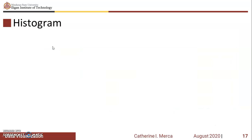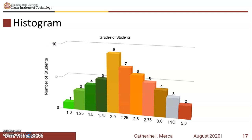A histogram is a data visualization that shows the distribution of data over a continuous interval for a certain period of time. It is basically a combination of a vertical bar chart and a line chart.